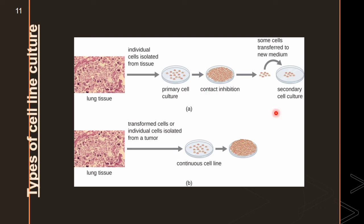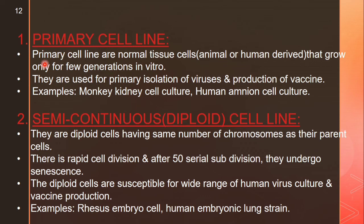Primary cell lines are normal tissue cells — animal or human — that grow only for a few generations in vitro. They are used for primary isolation of viruses and production of vaccines. Examples include monkey kidney cell culture and human amnion cell culture.